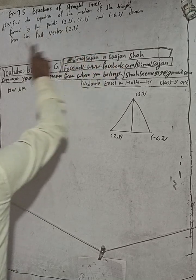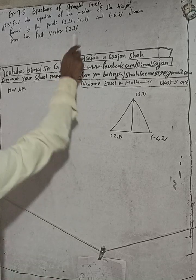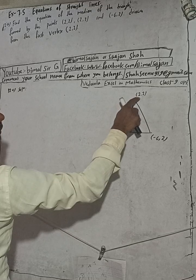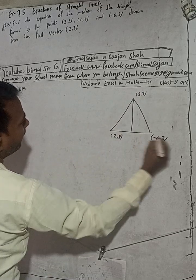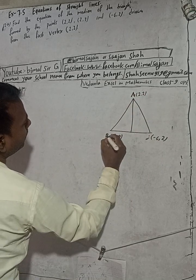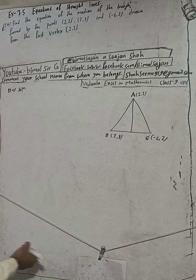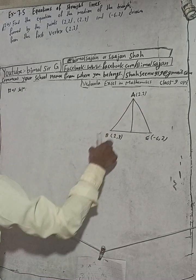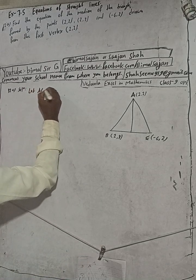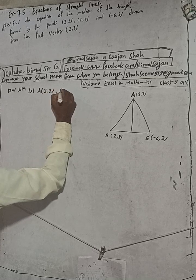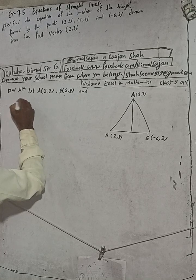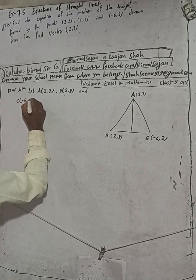And I will take the problem 2. Now the first vertex is 2,2. This is our A, this is our B and this is our C. Let A be 2,2, B be 2,8, and C be -6,2.